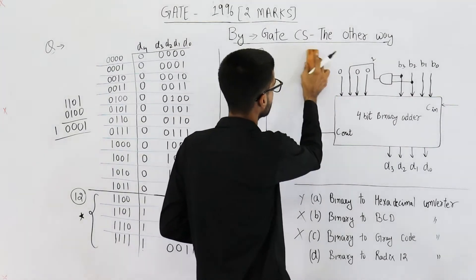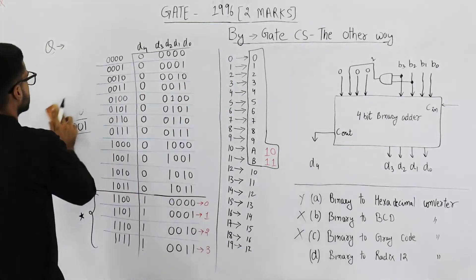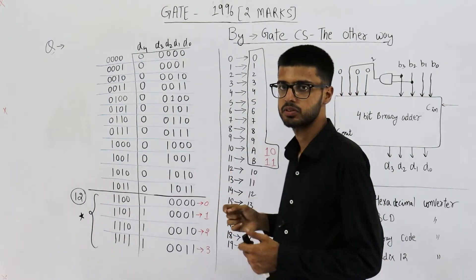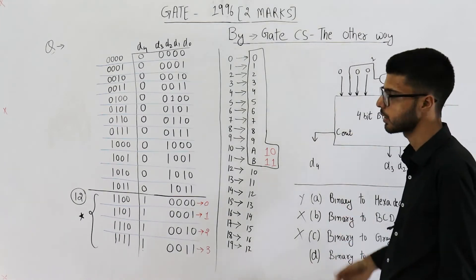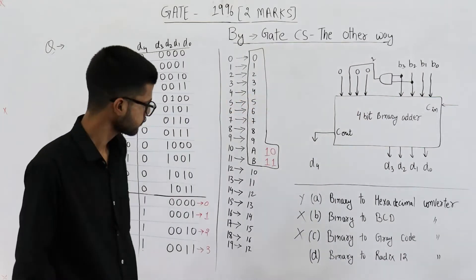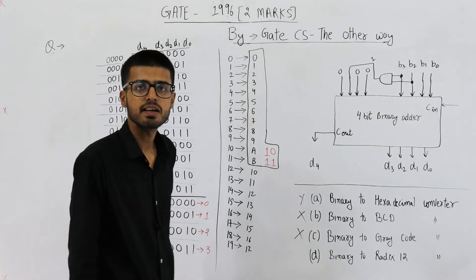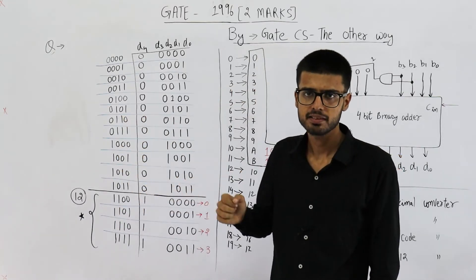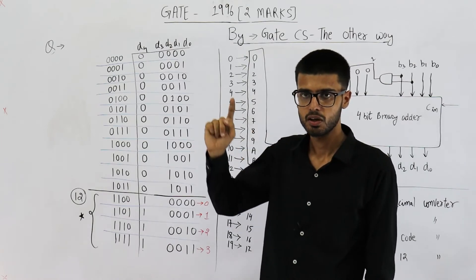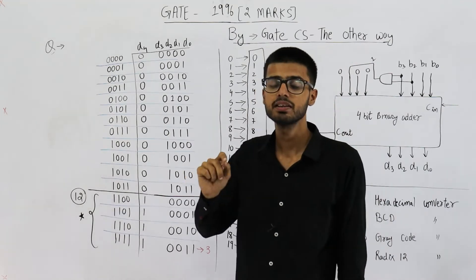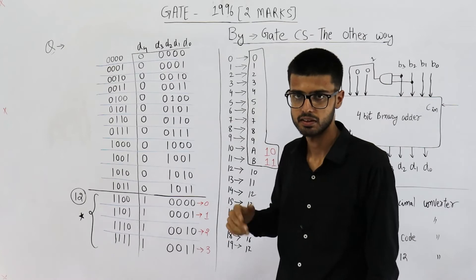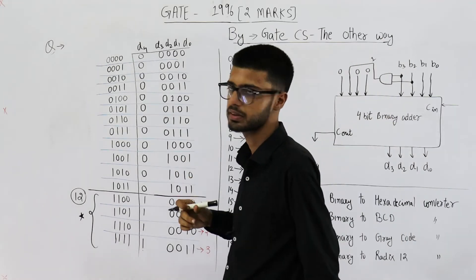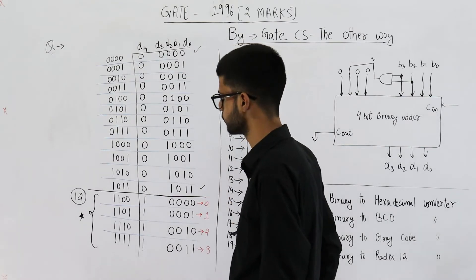Anyways, let's analyze option D. Option D says it is a binary to Radix 12 converter. Radix 12 means base 12. So option D is saying we are converting between two different number systems. First one is binary number system. Second number system is the base 12 number system. This option seems correct. See, in base 12 number system, you will have 11 basic symbols from 0 to 11. For example, in binary, you have two basic symbols 0 and 1. In base 8 number systems, you will have eight basic symbols from 0 to 7. Similarly, in base 12 number system, you are going to have 12 basic symbols from 0 to 11.